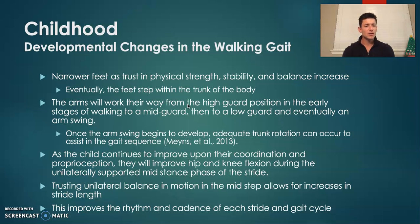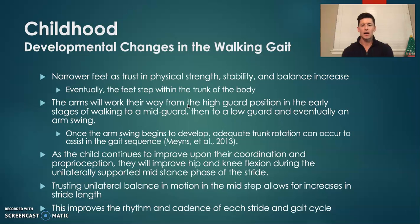Moving on to the childhood development of the walking gait sequence. As children gain experience in walking, their base of support begins to get narrower and their feet tend to get a little bit straighter. This comes as physical strength, stability, and balance increase. Eventually, they can work their way to having their base of support within the trunk of their body.